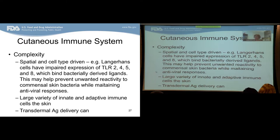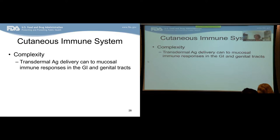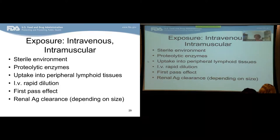Similar to the mucosal immune system, the cutaneous immune system is very cell-type driven. For example, Langerhans cells in the skin have impaired expression of different toll-like receptors that bind bacterially derived ligands — this may help prevent unwanted reactivity to commensal skin bacteria while maintaining antiviral responses. There is a large variety of innate and adaptive immune cells in the skin, and transdermal antigen delivery can also drain into mucosal immune responses in the GI and genital tracts.